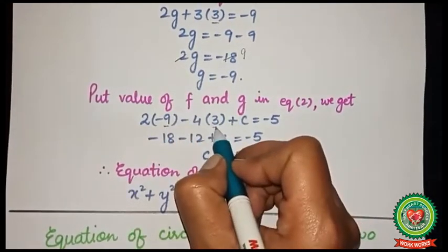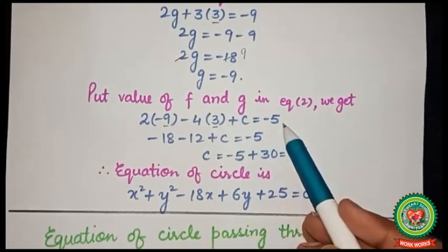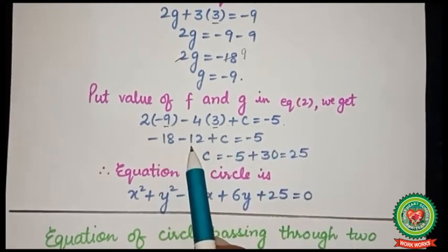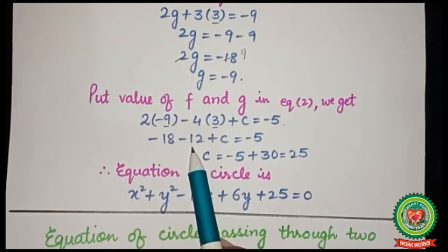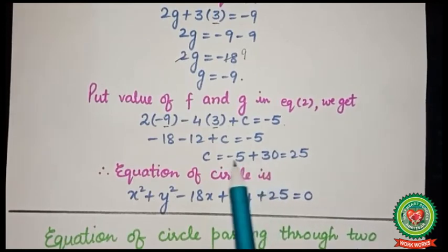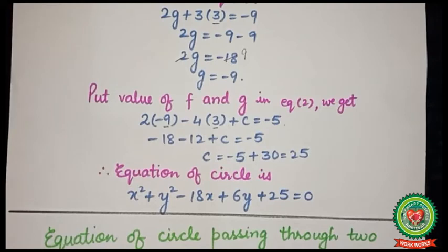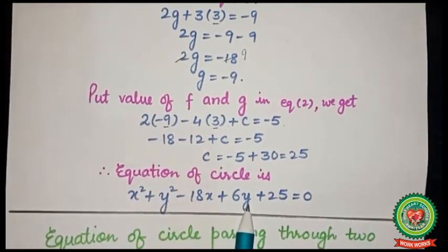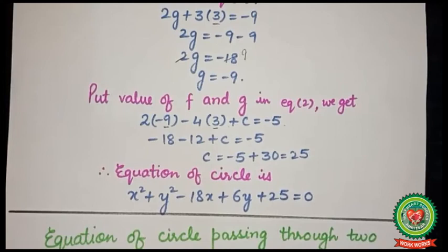Putting f = 3 and g = -9 into equation 2: 2(-9) - 4(3) + c = -5, so -18 - 12 + c = -5, giving c = -5 + 30 = 25. Substituting g, f, and c into the general equation, the equation of the circle is x² + y² - 18x + 6y + 25 = 0.